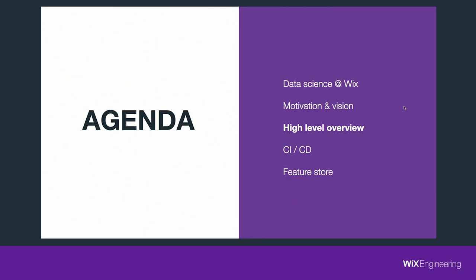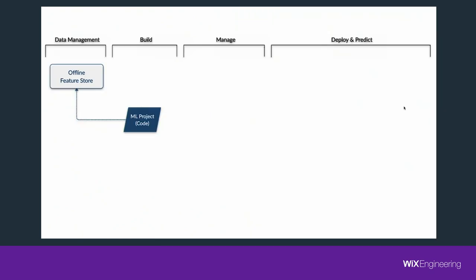Now that the motivation and vision are better understood, let's go over a high-level overview of the platform. We start with data. The data management part of our platform is what we call the feature store — a term I'll dive much deeper into. The general idea is how do we formalize the notion of an ML feature that can be used both for training and for serving, and to allow feature reuse between different projects here at Wix.